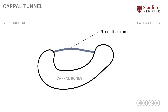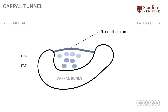There are the tendons of the FDS that will cross through, as well as the tendons of the FDP — a total of eight tendons: four of the FDS and four of the FDP. So eight tendons crossing through this very limited space, the carpal tunnel.